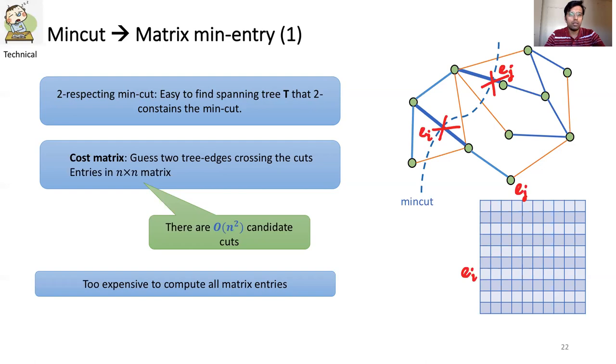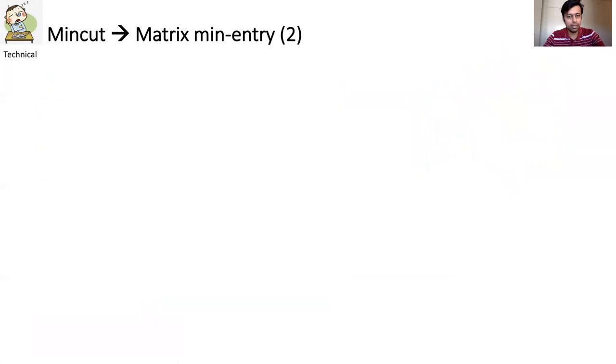The problem that we face over here is that there are just too many cuts to enumerate over. Even in the streaming algorithm where in one pass we can compute around n many cuts, we need n passes if we want to enumerate it naively. So the question is, is there a way we can enumerate it cleverly?